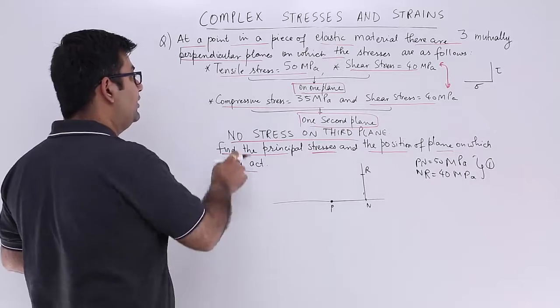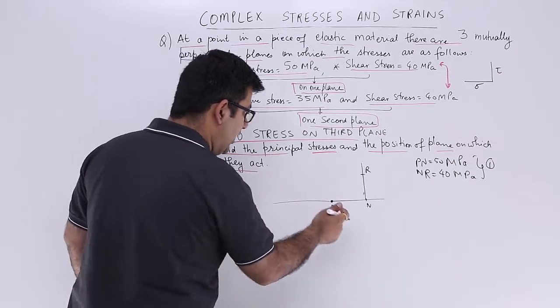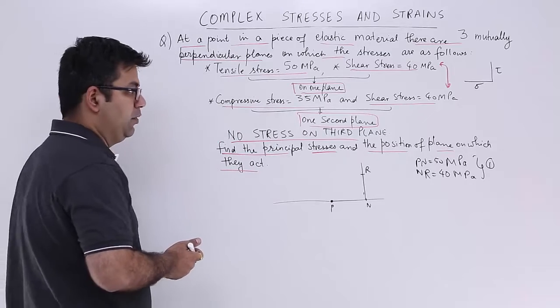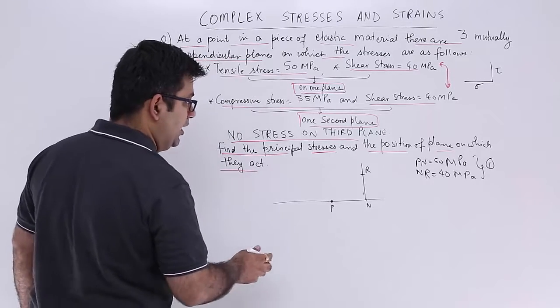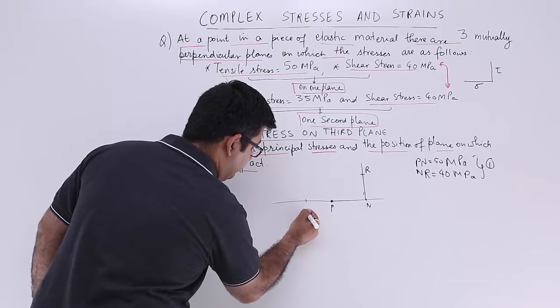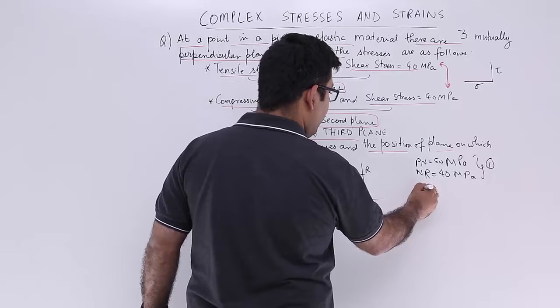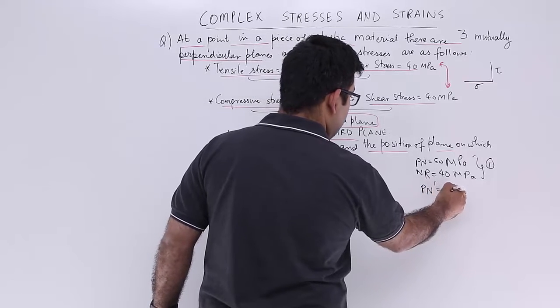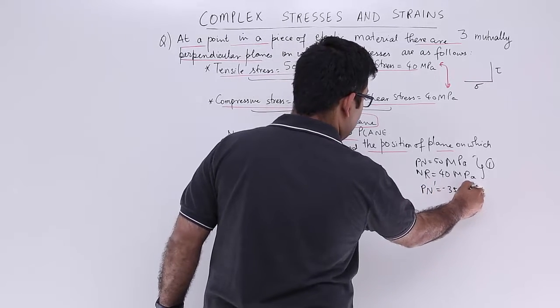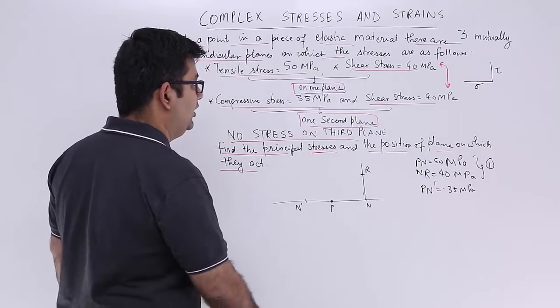Let's come to the second plane that is compressive stress of 35. So now I will have to go in the backward direction. So I will mark a point, let us say n dash. So Pn dash is representing minus 35.